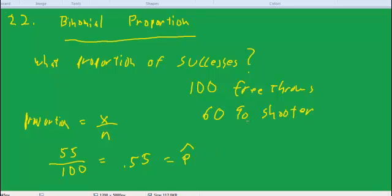So the true p is 60. That's the true percentage that a person makes, that's sort of given. And 55% might be what they make in a batch of 100 free throws. And then they take another batch, and they might get a different proportion. They might get 62% or whatever. So that's a proportion.